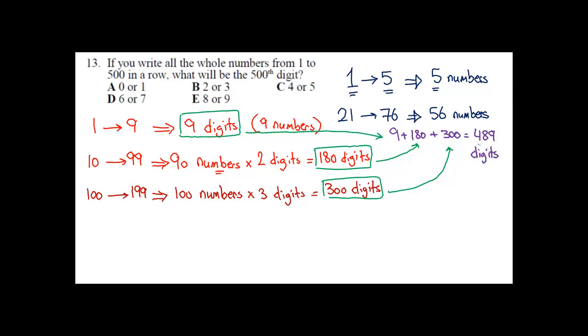So the last digit we have from the numbers we counted is the 489th, which is the 9 here in 199. The last one we counted has 489 digits.